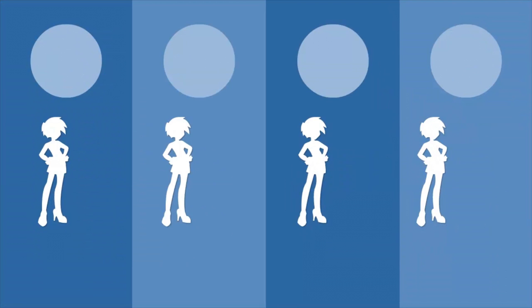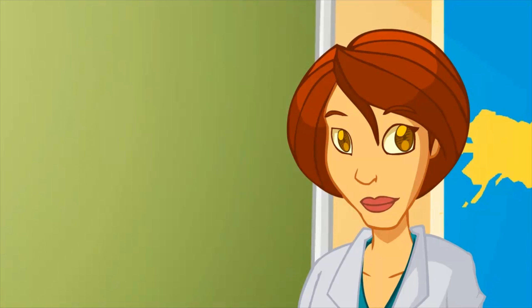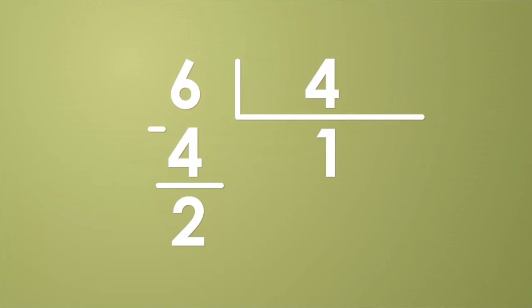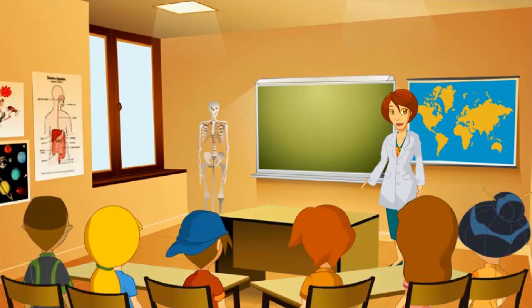She gives one chocolate each and she's got two left. Because six divided by four equals one and the remainder is two. Now think, what can we do with those two chocolates?